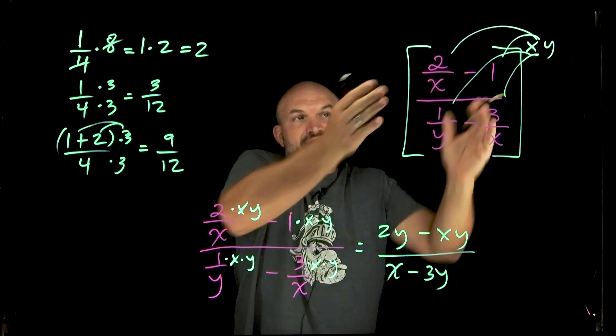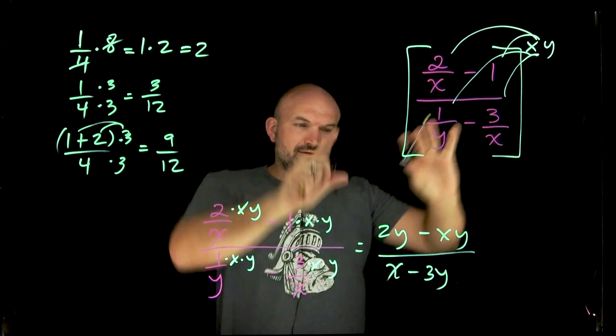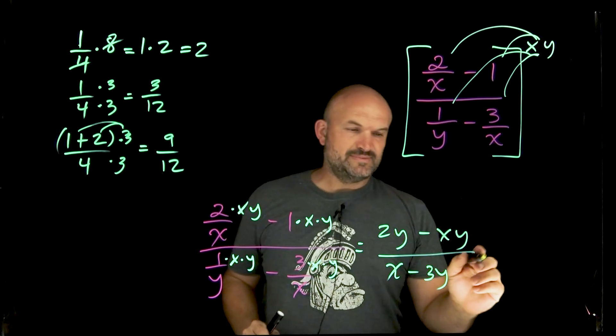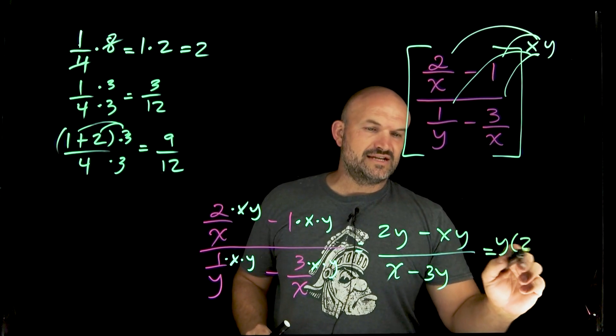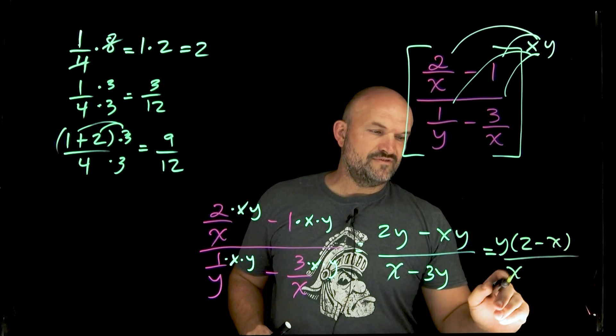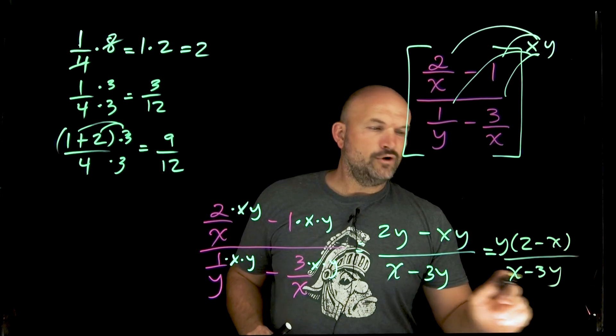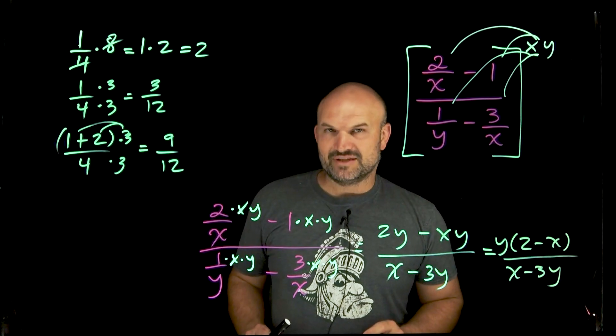Which now I have reduced this complex fraction from being very complex to one fraction. So now it's simplified. You can always look to see what else you can factor out and see if anything else can be divided out, but in this case, this is going to be your factored form. We are all good. And hopefully now you have a better understanding of complex fractions.